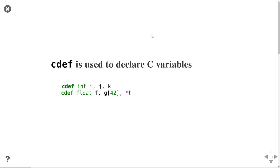The same thing applies to floating point values. There was a question about whether 'float' means float or double. When Python says float, it actually means double. In Cython you always use the C type, so here you have three different types: f is a normal float value, another is an array of length 42 containing 42 floating point elements, and the third is a pointer to a floating point value. All these C types are available through these C definitions.